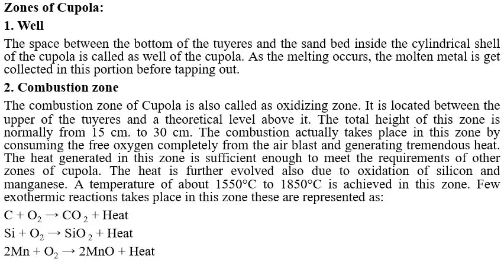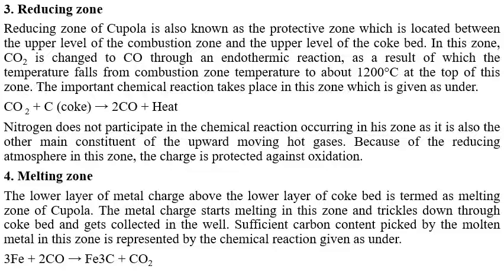Exothermic reactions in the combustion zone include: C + O₂ → CO₂ + heat; Si + O₂ → SiO₂ + heat; and Mn + O₂ → 2MnO + heat. The reducing zone, also known as the protective zone, is located between the upper level of the combustion zone and the upper level of the coke bed.